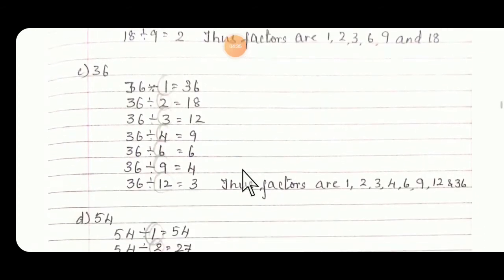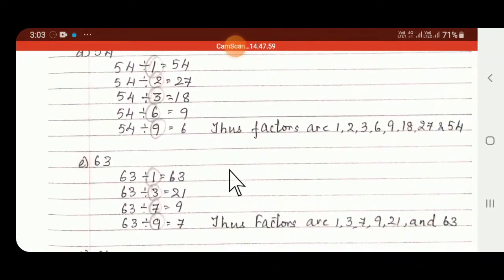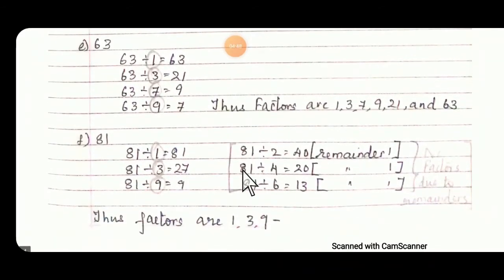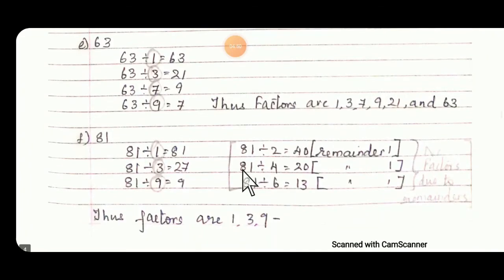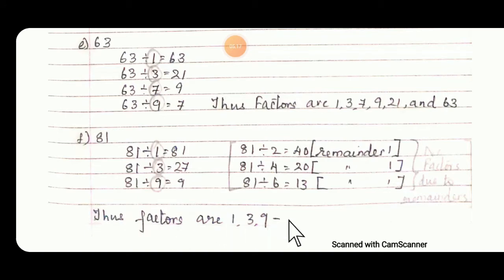Similarly C, then D, E, and F. When 81 is divided by 1 you will get 81 itself. When 81 divided by 2 you will get remainder 1, so that is not a factor of 81. Divide by 3, you will get remainder 0 — so it is a factor. By 4 it is not a factor. By 9 again it is a factor. Those factors are 1, 3, and 9.